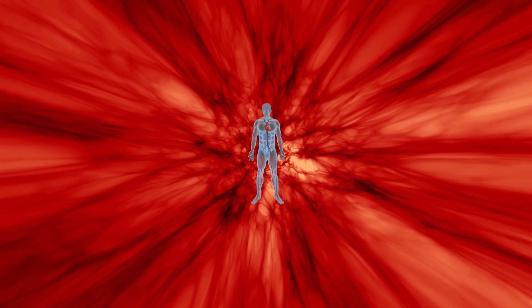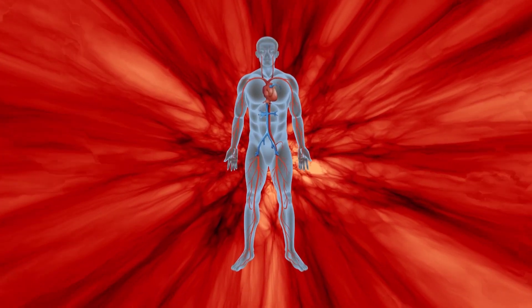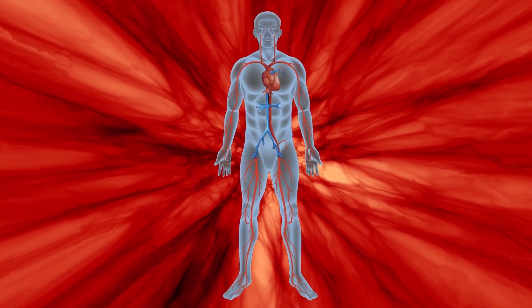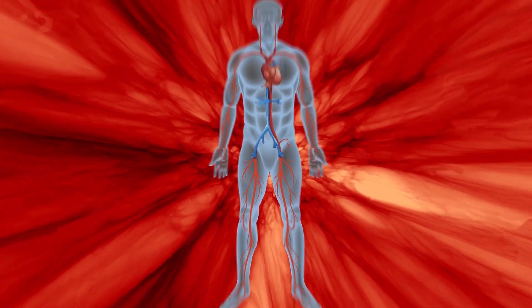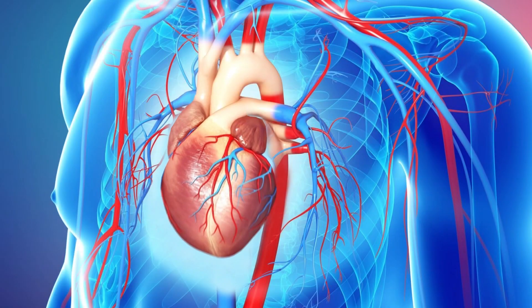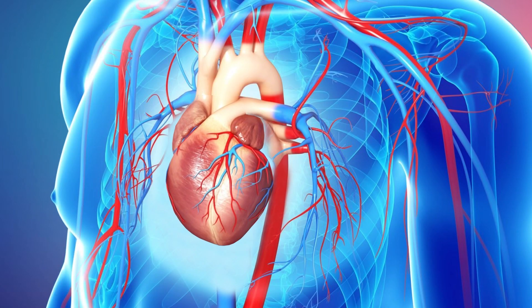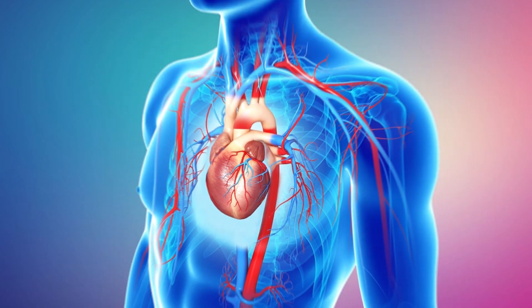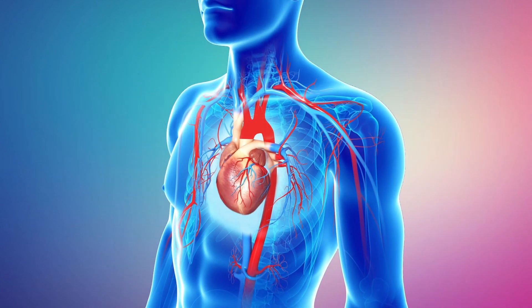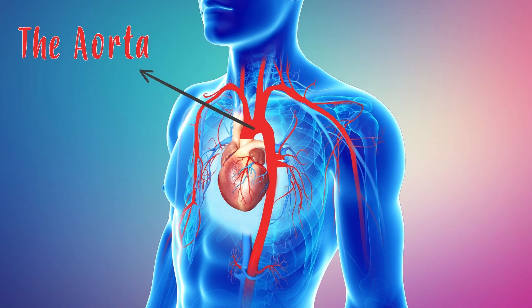We're going to start a journey through the circulatory system so we can understand it much better. The journey of blood begins in the heart. With the pulsations of the heart, the blood comes out through one of the greatest highways of the circulatory system called the aorta.